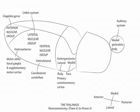Next, draw the lateral geniculate body and show that it is involved in the visual system. Visual information from the optic tract relays in the lateral geniculate body and projects to the primary visual cortex in the posterior occipital lobe.